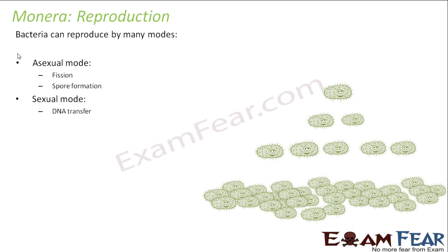When I talk about asexual reproduction, they can reproduce by fission or by spore formation. We have discussed reproduction in one of our lessons in class 10, where I told you about the different types of asexual and sexual reproduction. So in bacteria, fission is most common, and asexual reproduction is more common than the sexual mode.